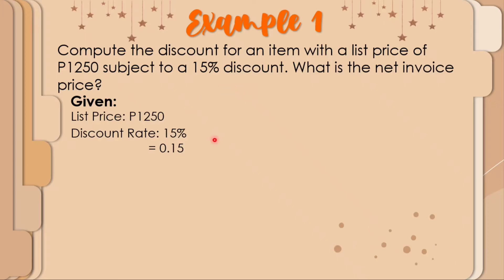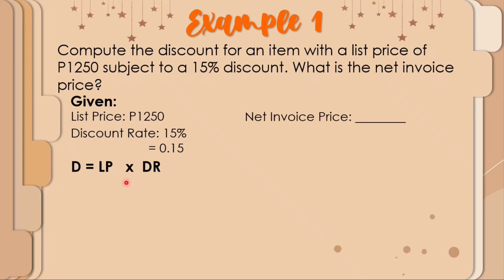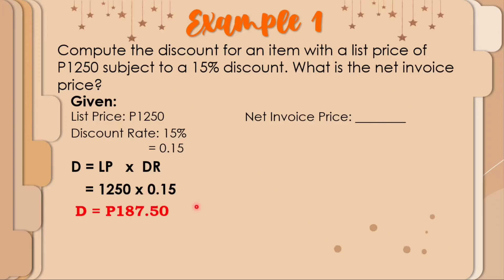Before we find the net invoice price, we need to solve first for the amount of the discount. Convert 15 percent to decimal: 0.15. Using the formula — list price times the discount rate — substitute: 1,250 times 0.15.